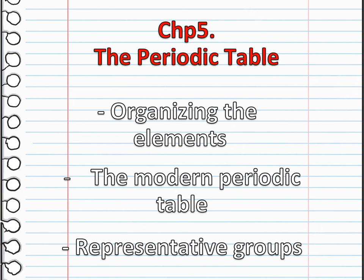Moving to chapter 5, which is the periodic table. We are going to talk about organizing the elements, the modern periodic table, and the representative groups. The periodic table of elements arranges the chemical elements into rows and columns — it is an organizing icon of chemistry and is widely used in physics and other sciences. We are going to understand how each element is organized, why it is organized that way, and the characteristics of each element based on its row and column.